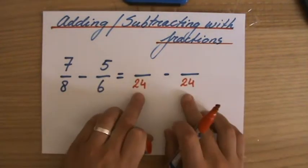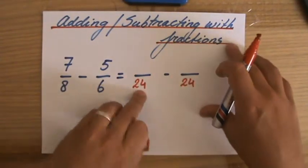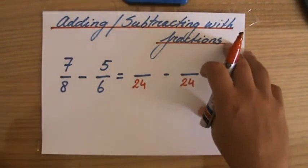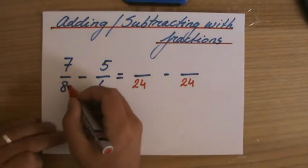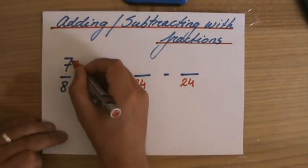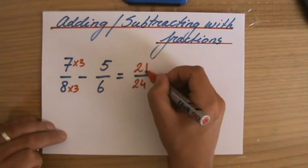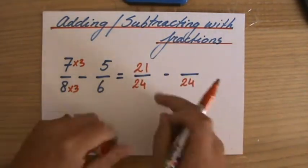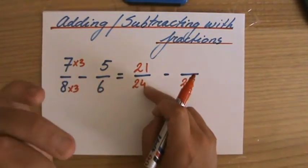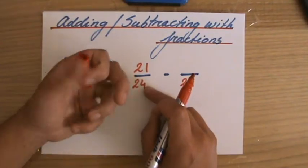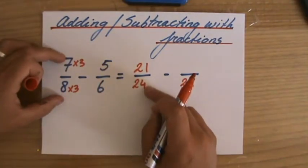Yeah, but if I'm not sure if it's the lowest common multiple, I can always check my final answer and make sure that is simplified. 24. 8 times 3 I've said is 24, so 7 times 3, because I am manipulating it. 21 over 24 is equivalent, is the same, equals if you like, 7 over 8.